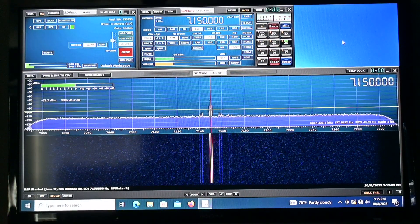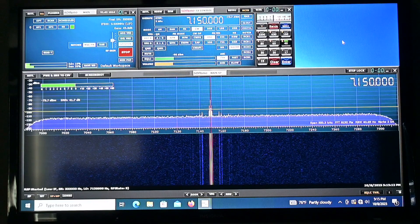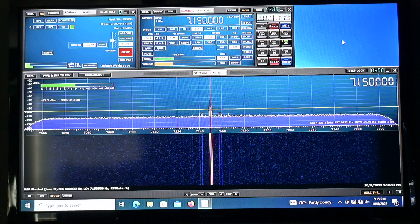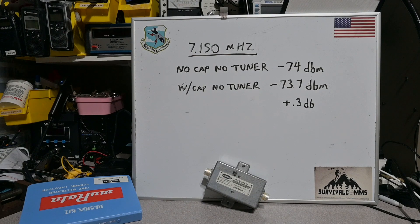And this is our signal with the capacitor installed, minus 73.7 decibel milliwatts. So we did not see a disadvantage leaving our capacitor in line at 40 meters, in fact we saw a slight gain of three-tenths of a dB surprisingly.